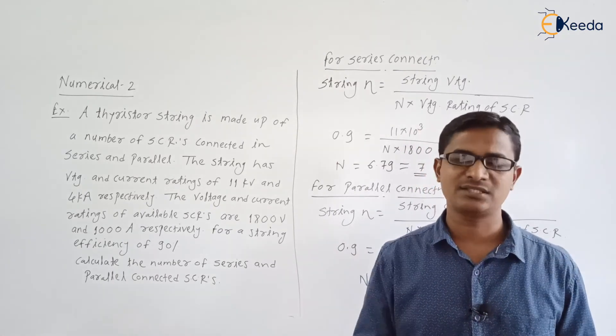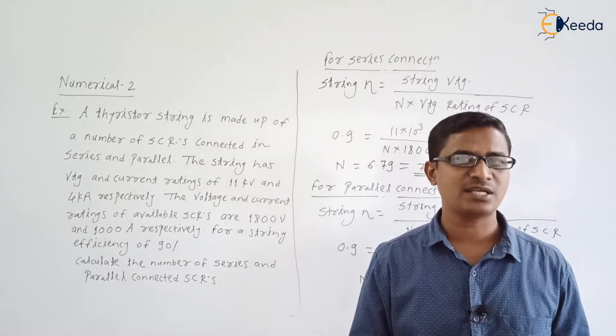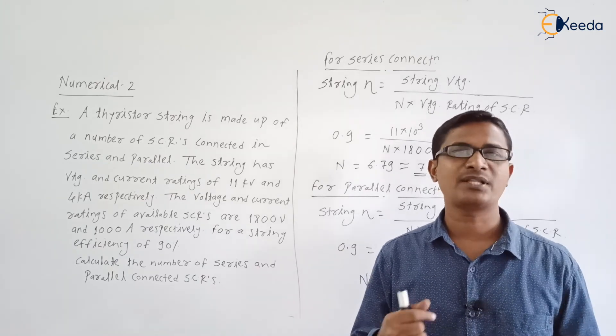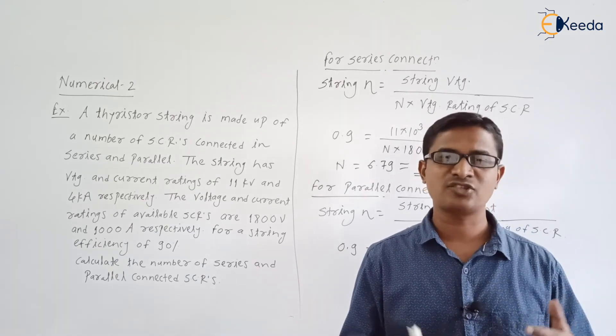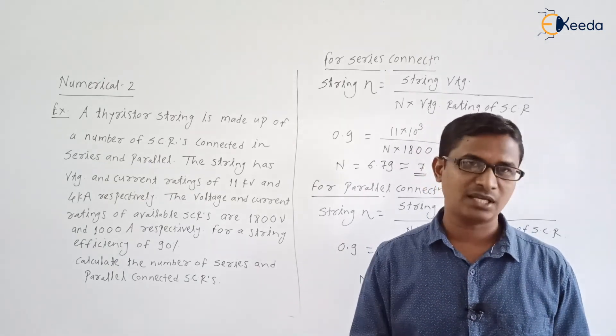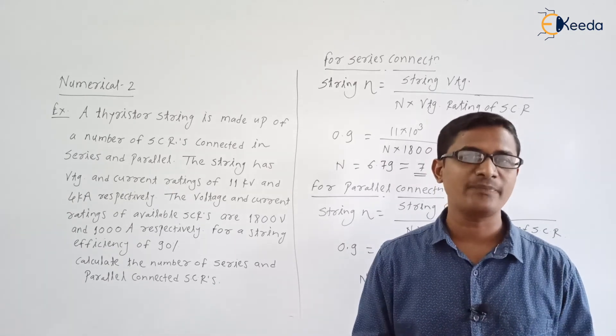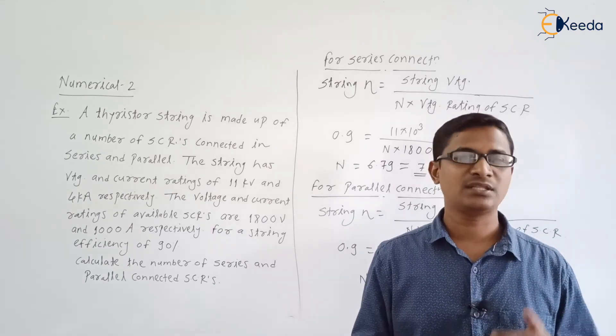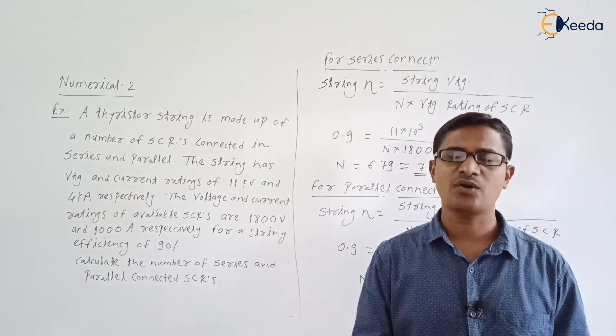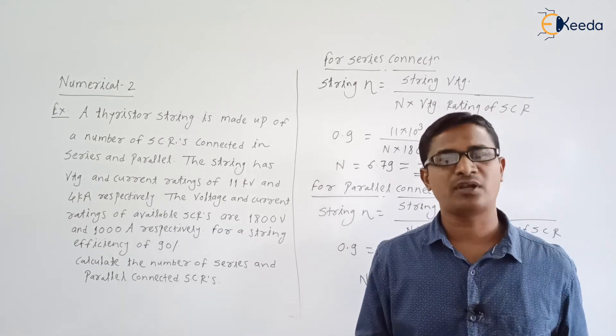We have started with the basic structure of the SCR, static VI characteristics, dynamic characteristics of the SCR, gate characteristics of the SCR. After that turning on methods, protection of SCR, commutation of SCR, different commutation techniques. Series operation, parallel operation, thermal modeling of the SCR. All the points are very important.